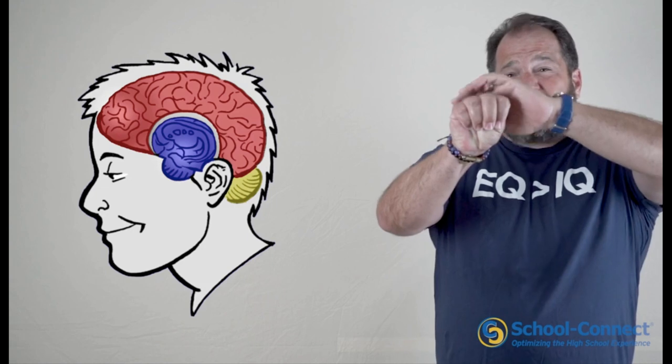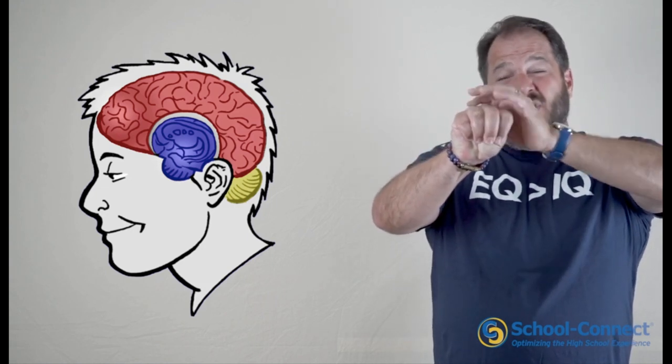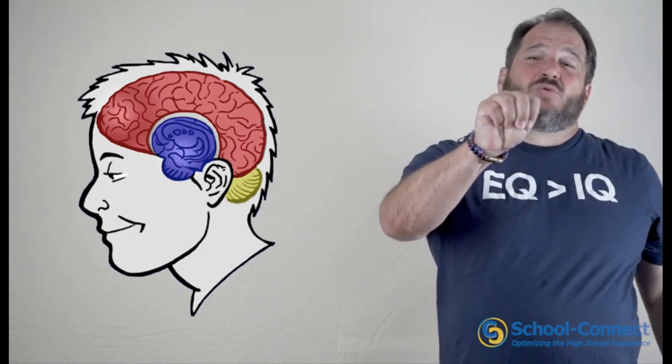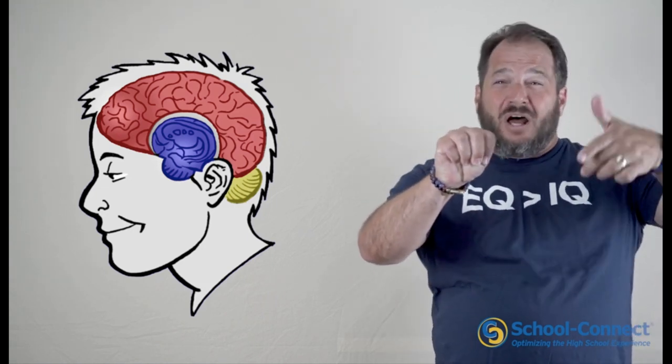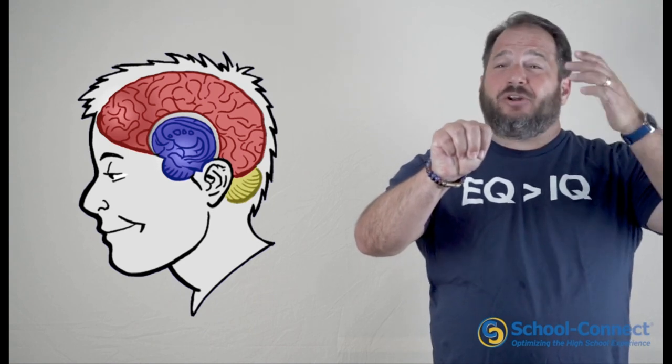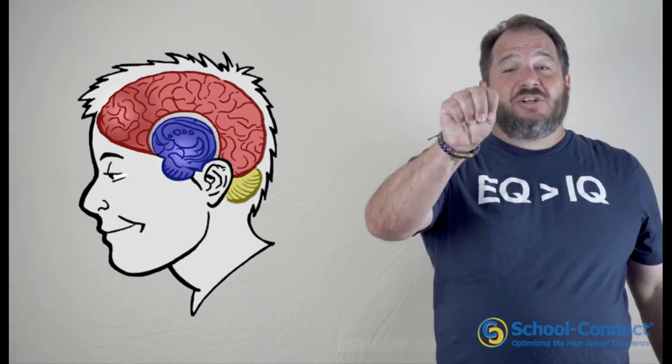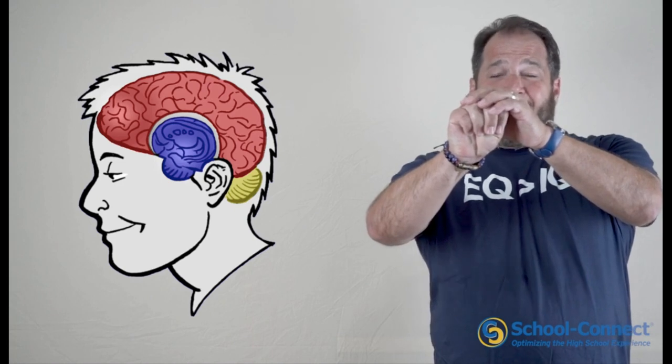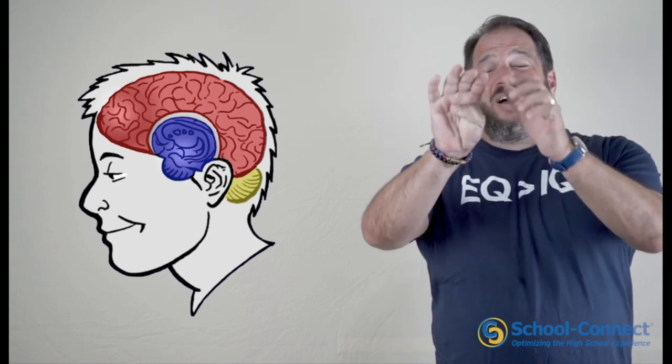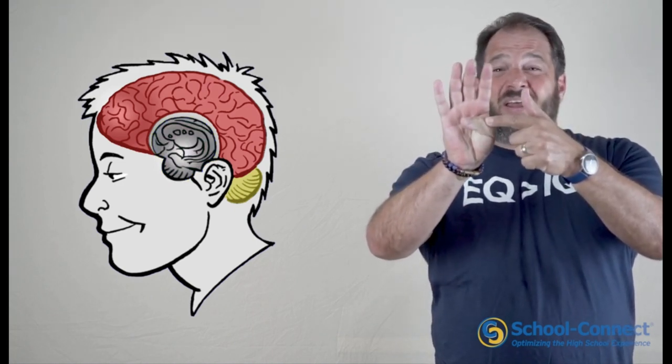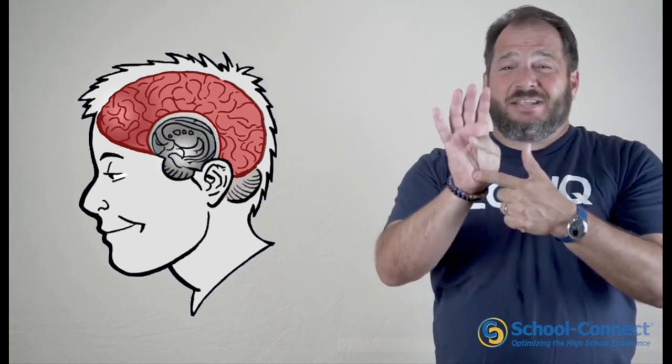Our neocortex — this outside part — is where we can do rational, logical, analytical thought. But that's the only part of our brain that can do that. Our limbic system cannot do rational thinking, and our brain stem cannot either.